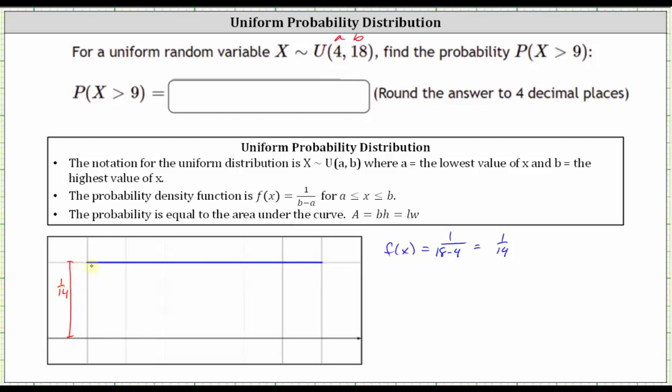So again, we know the minimum is four. Let's let four be here on the left. The max is 18. Let's place 18 on the right. Notice how the width of this interval would be 18 minus four, 14.